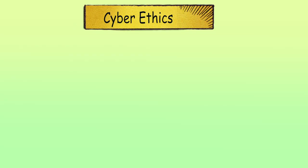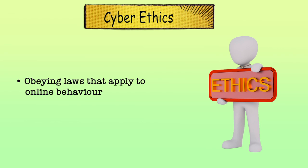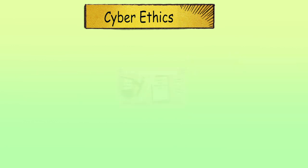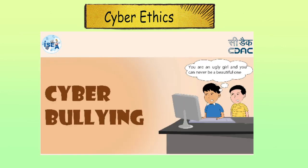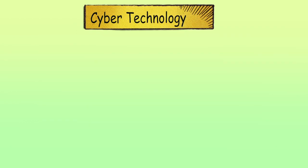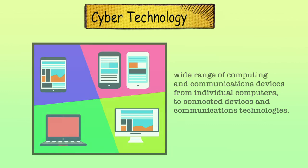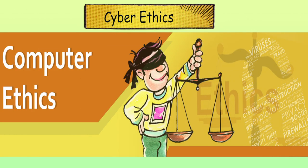Now let us discuss what cyber ethics is. Cyber ethics is a code of behavior for moral, legal and social issues on the internet or cyber technology. It also includes obeying laws that apply to online behavior. By practicing cyber ethics, one can have a safer and more enjoyable internet experience. Cyber bullying is the use of information technology to repeatedly harm or harass other people in a deliberate manner and has become increasingly common, especially among teenagers. Cyber ethics is more accurate than internet ethics, which is limited only to ethical issues affecting computer networks.